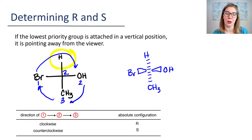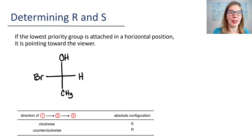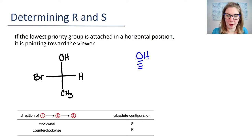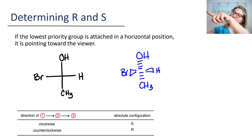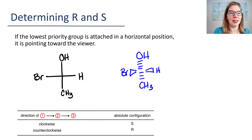Now this is if your lowest priority group is on a vertical position, which honestly does not happen very often. So what if it's on a horizontal position? What I've done is rearranged this molecule so that my lowest priority group is on a horizontal position, because that's going to be pretty typical. Remember that the vertical positions are pointing away from you and the horizontal positions are pointing at you. Now if your lowest priority group is horizontal, essentially all you're doing is changing your perspective — instead of looking at it so that your lowest priority group is pointing away from you, you're looking the other way.